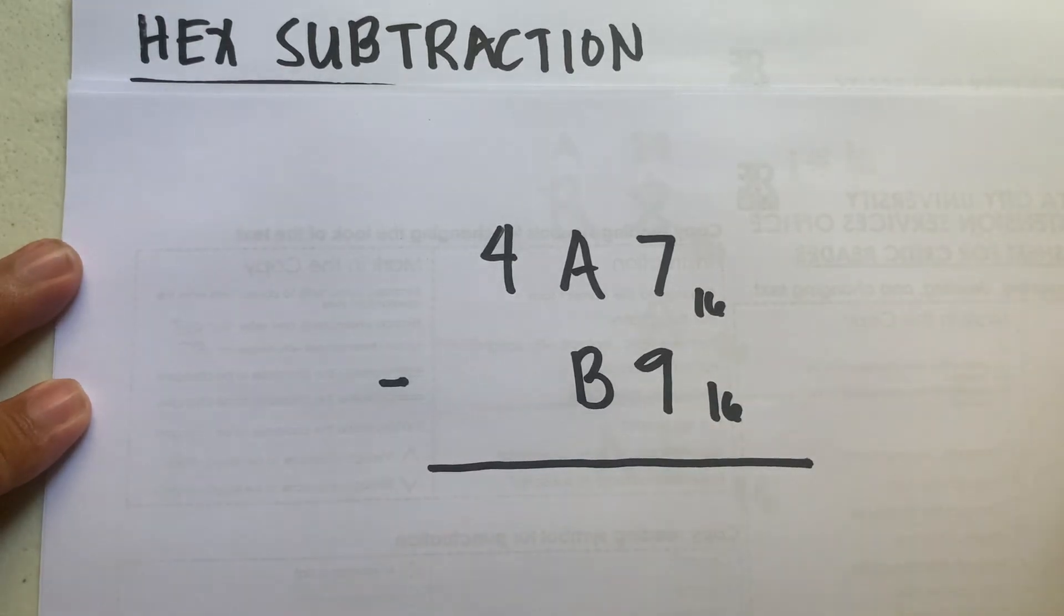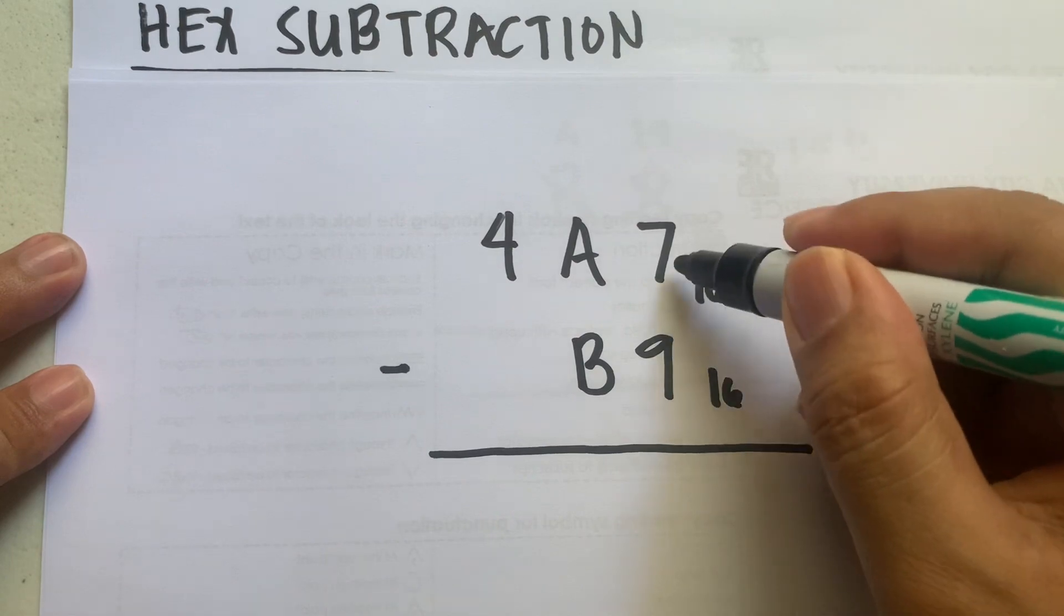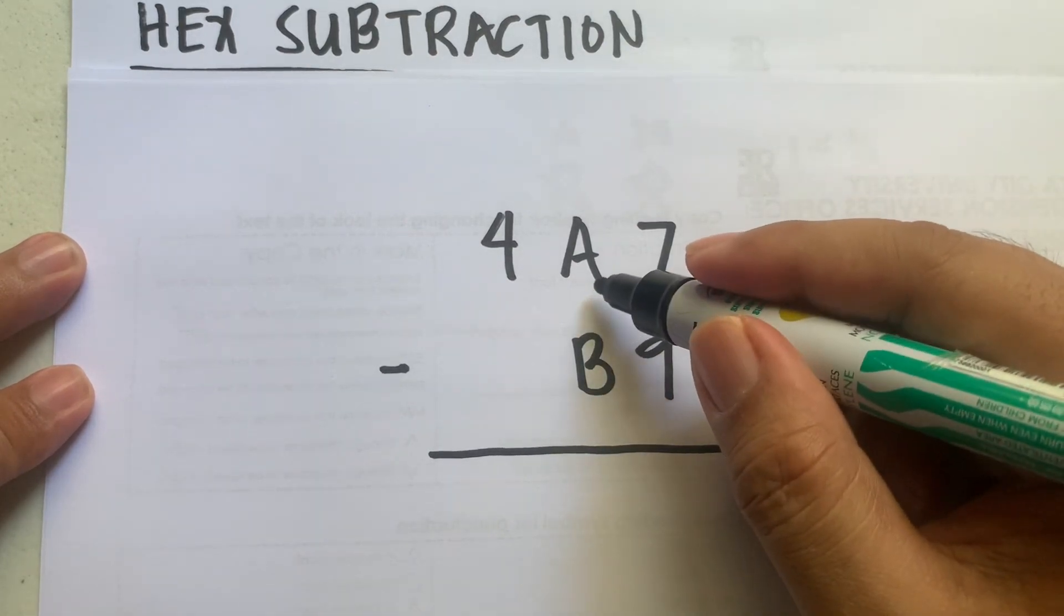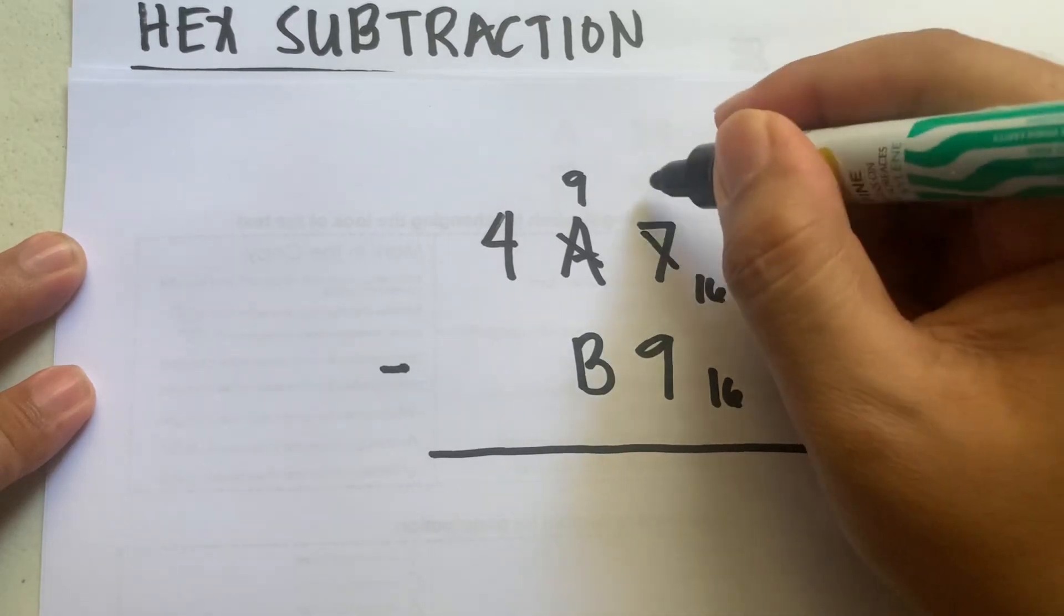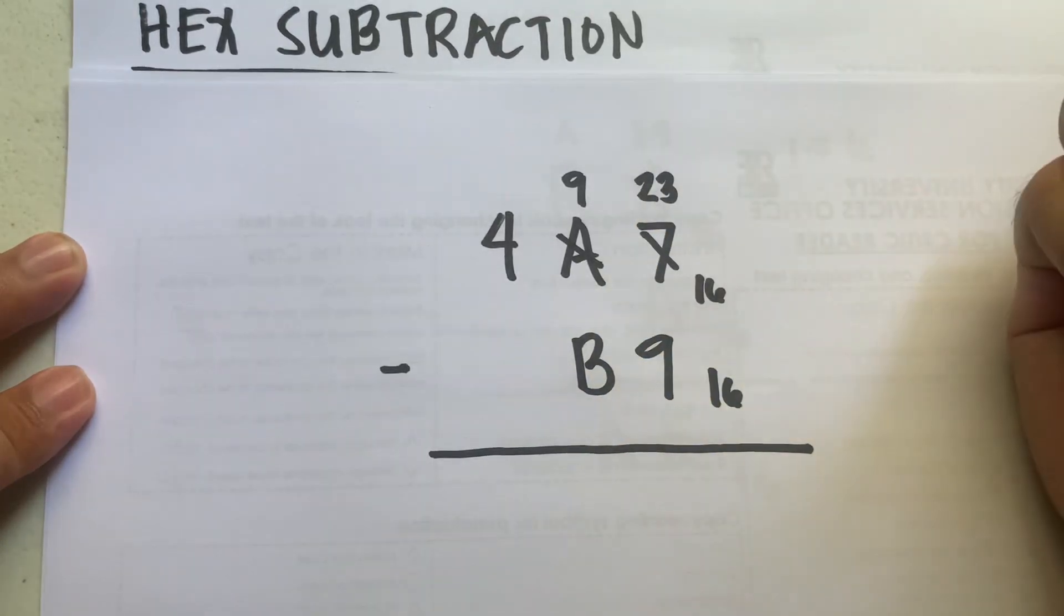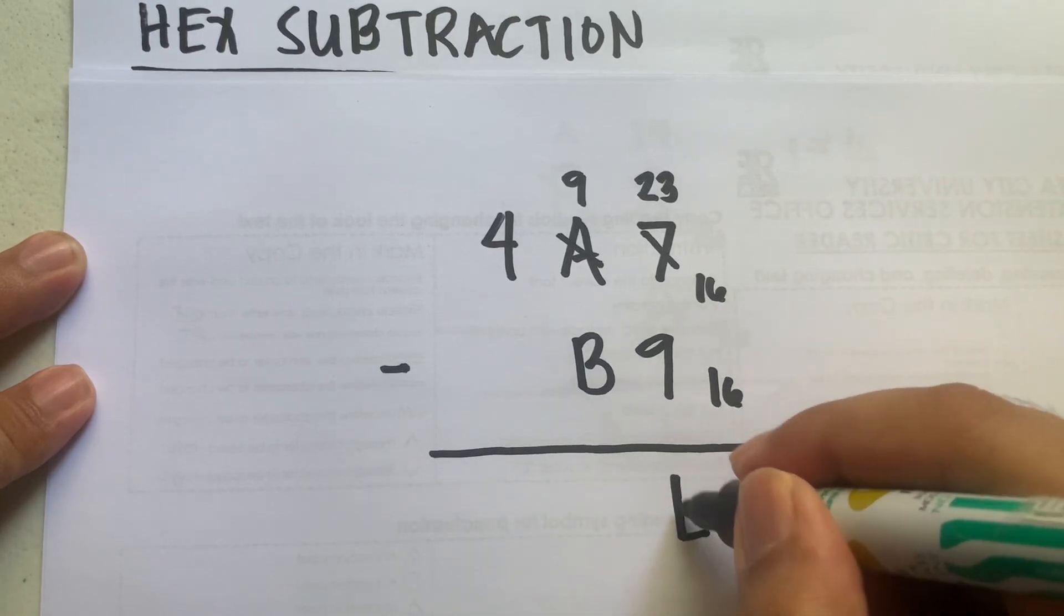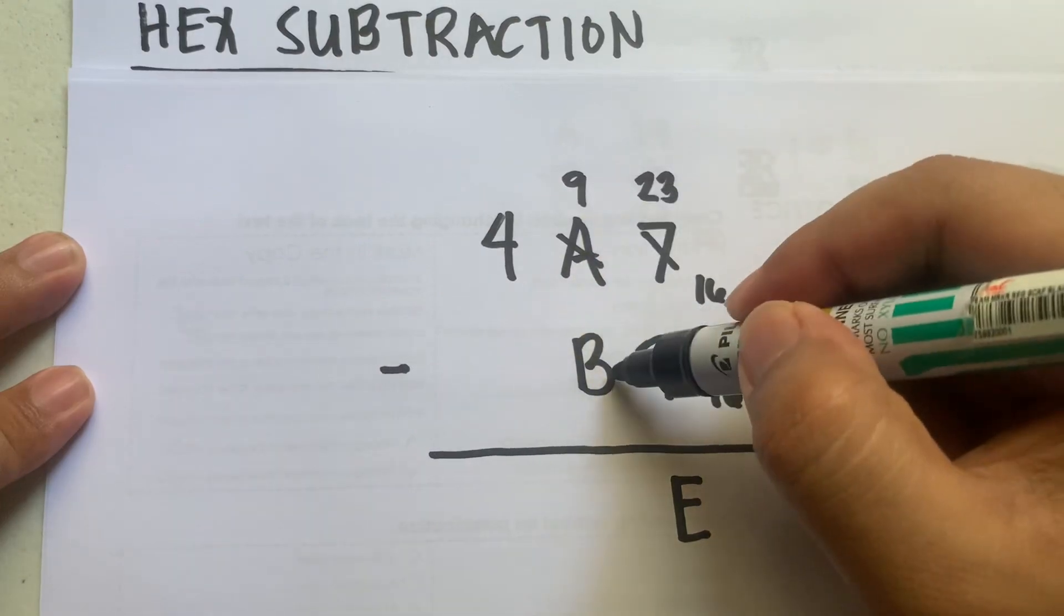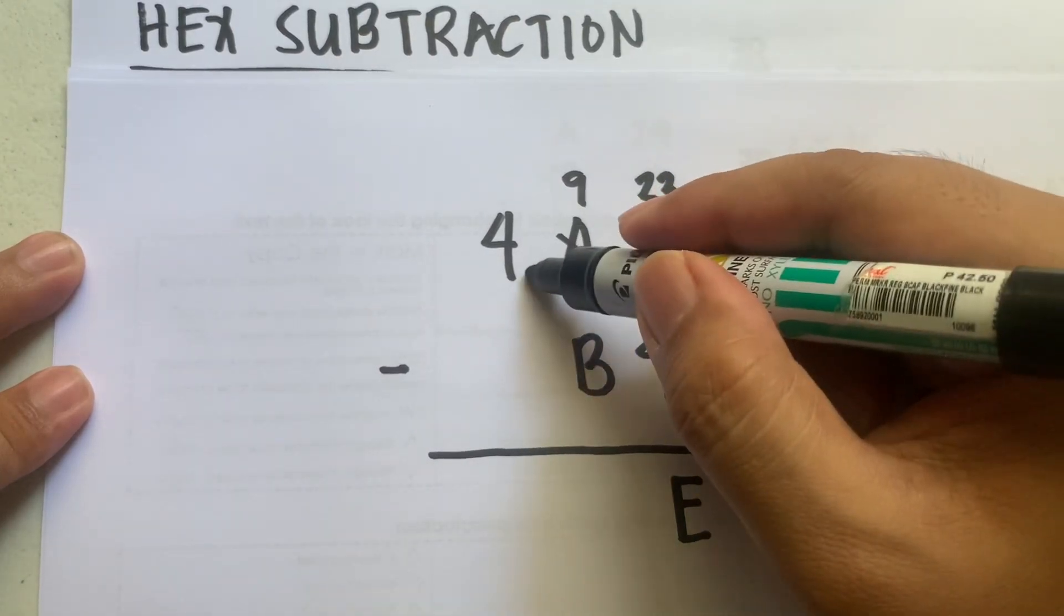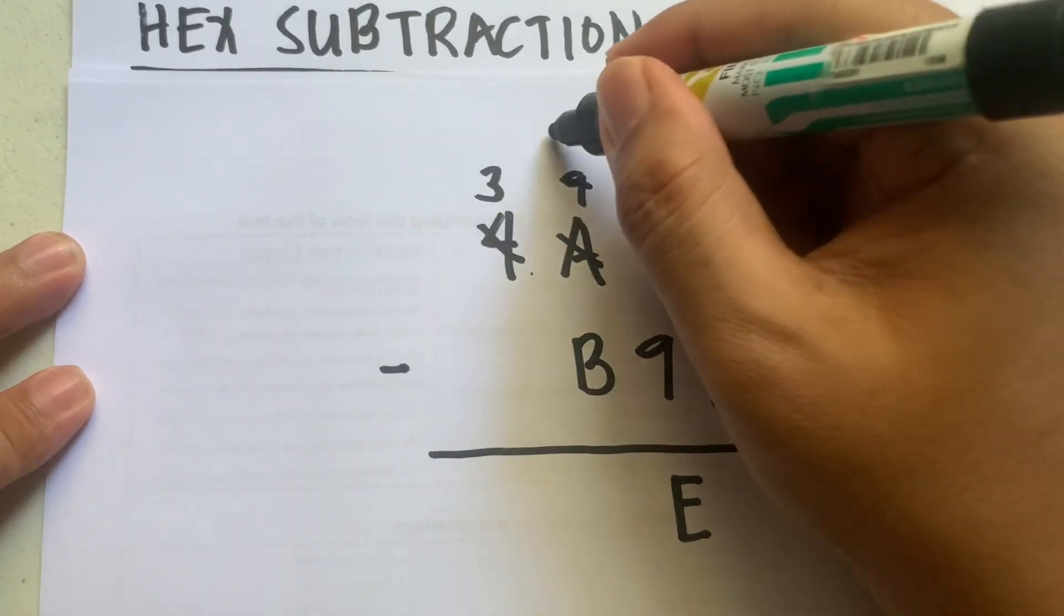Let's subtract these hexadecimal numbers. 7 minus 9 cannot be done, so 7 will borrow one from A. Since A is 10, A becomes 9, and 7 becomes 23. 23 minus 9 is 14, which is E. Now, 9 minus 11 cannot be done, so 9 will borrow one from 4. 4 becomes 3, and 9 becomes 25